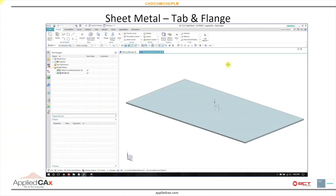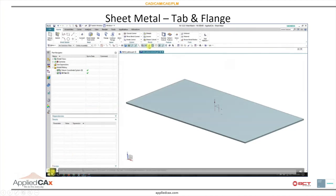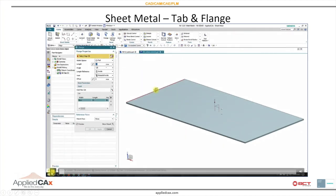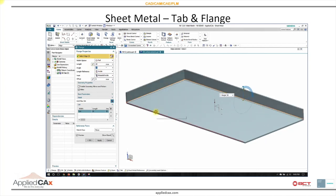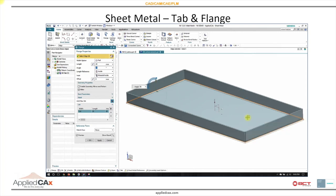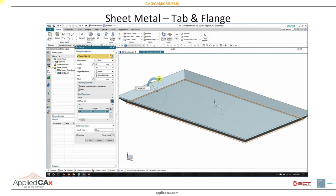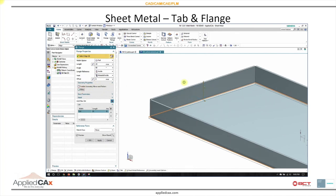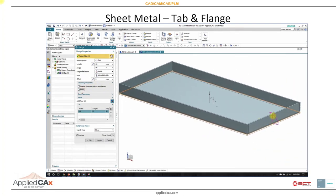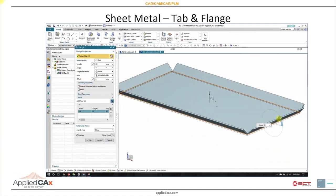Sheet Metal has had some significant improvements. Before, in previous versions, you could only do a single flange. You always had to do extra work to tie the height of all your flanges together to make, say, a box. Now I can just create a tab, put four flanges on all at exactly the same height — they're all the same feature.